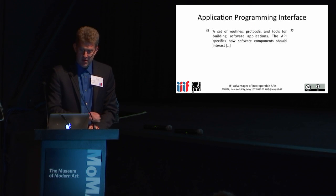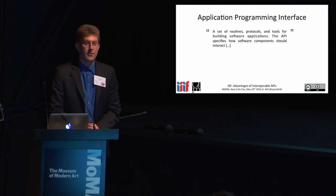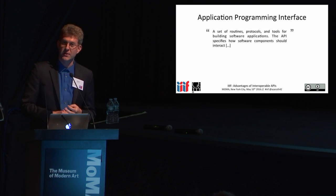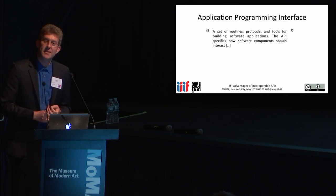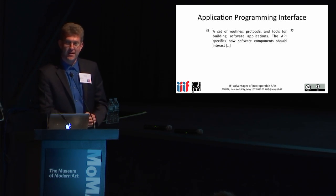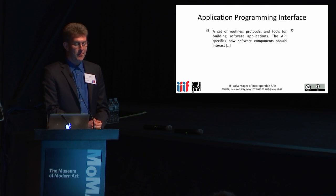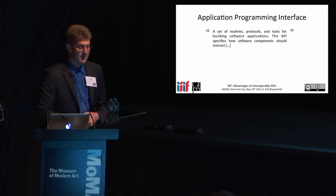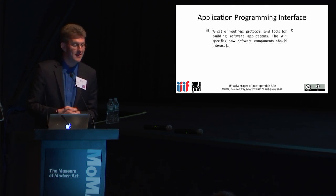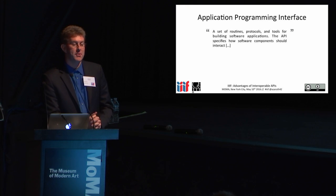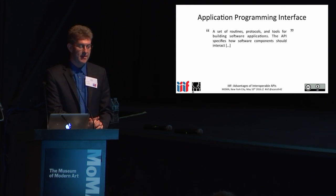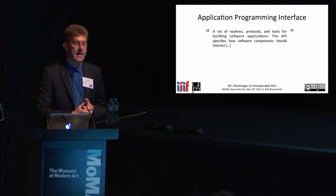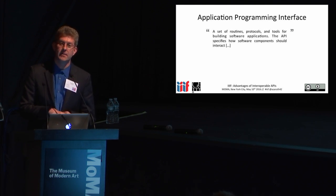As any good researcher, I did the first thing — go to the source of all human knowledge, which is, of course, Wikipedia, and look to see what they define an application programming interface as. Wikipedia says it is a set of routines, protocols, and tools for building software applications. The API specifies how software components should interact.